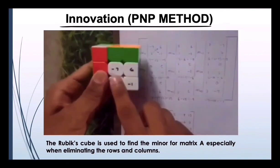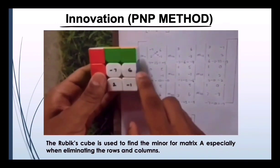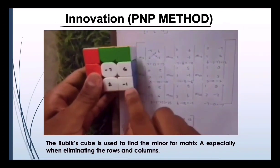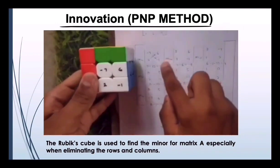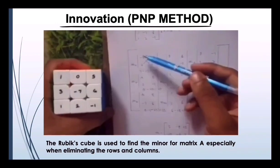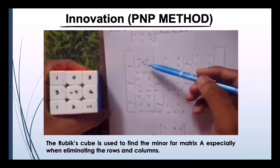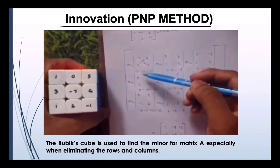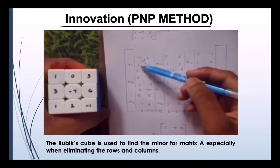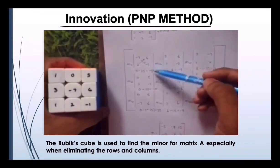So we are left with negative 7, 6, 2, negative 1, as you can see here. After that, we are going to multiply negative 7 by negative 1 and subtract 2 times 6, and we got negative 5.